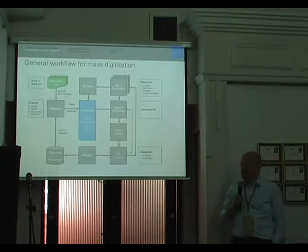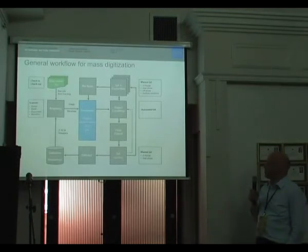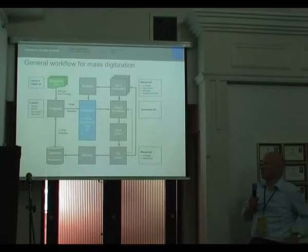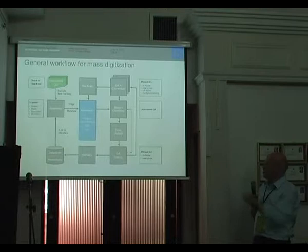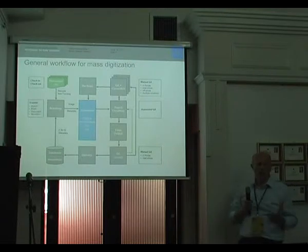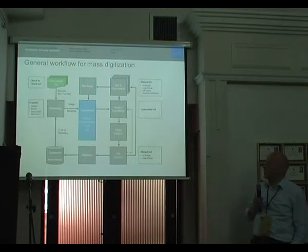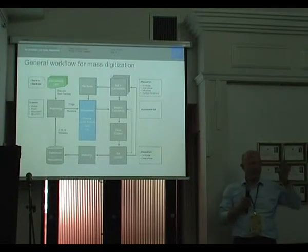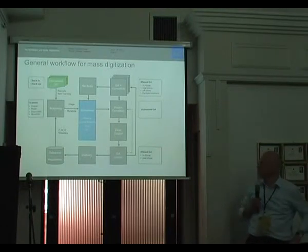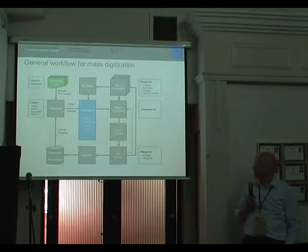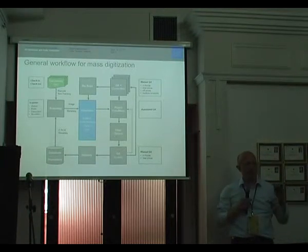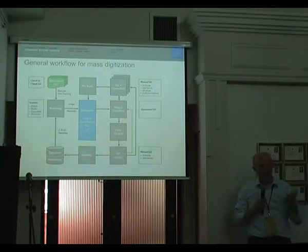This shows a general workflow for mass digitization. It includes scanning, but scanning is mainly provided by the content providers themselves — we only receive image and metadata. In the center, the blue block is the conversion, which includes imaging, layout analysis to find certain blocks on the newspaper page, OCR on text blocks, and intelligent structure recognition — meaning we group recognized blocks and text into articles.